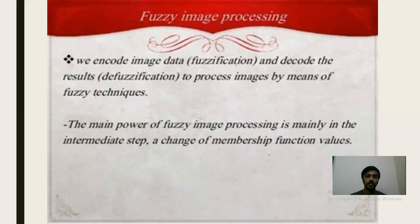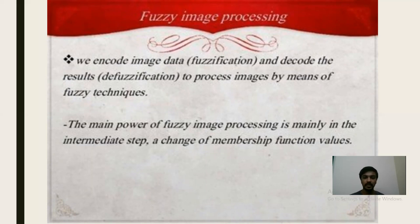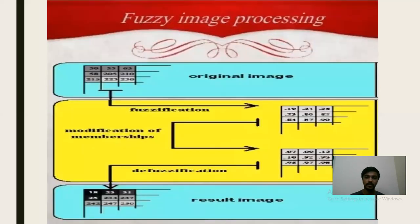We encode image data, called fuzzification, and decode the results, called de-fuzzification, to process images by means of fuzzy techniques. The main power of fuzzy image processing is mainly in the intermediate step — a change of membership function values.